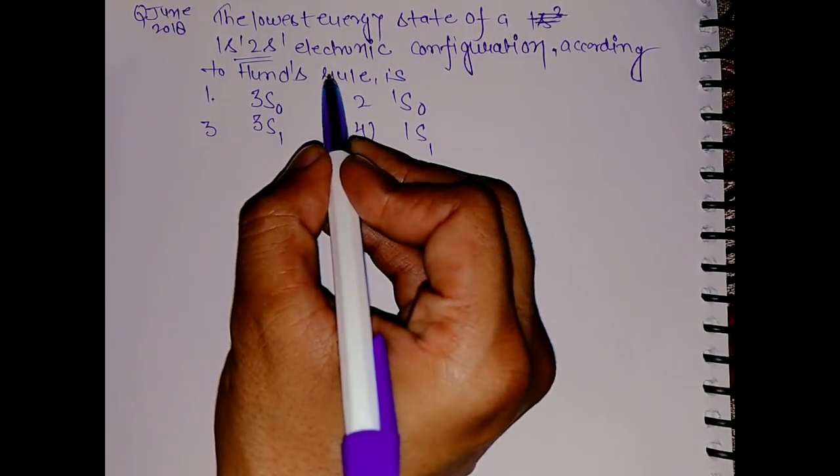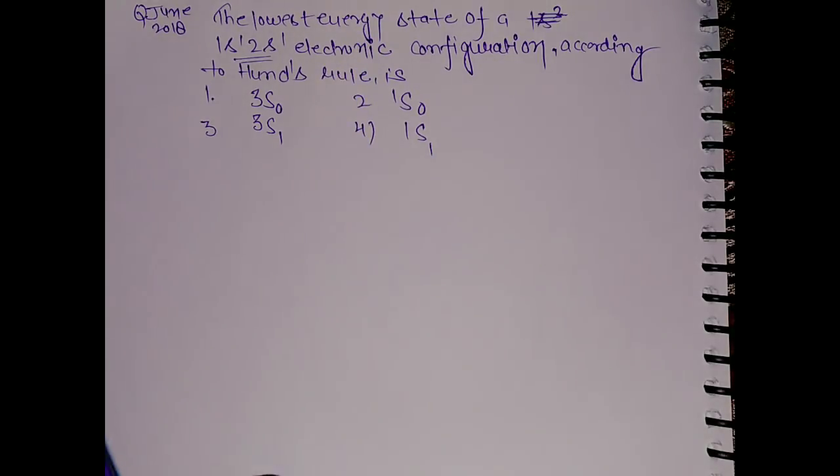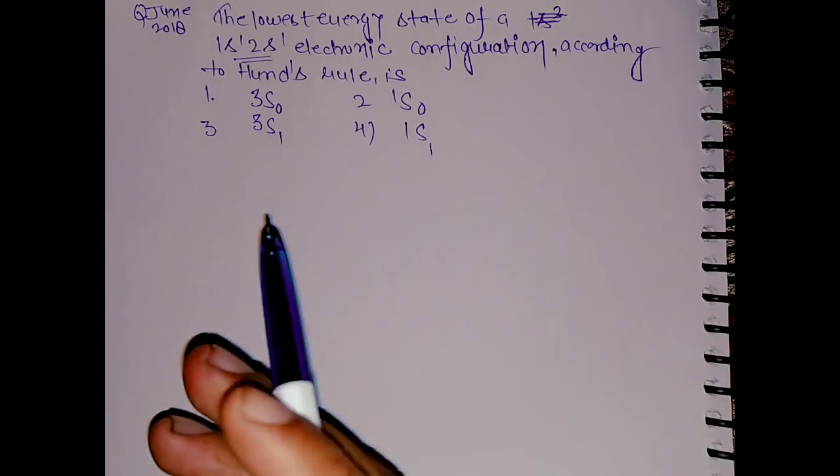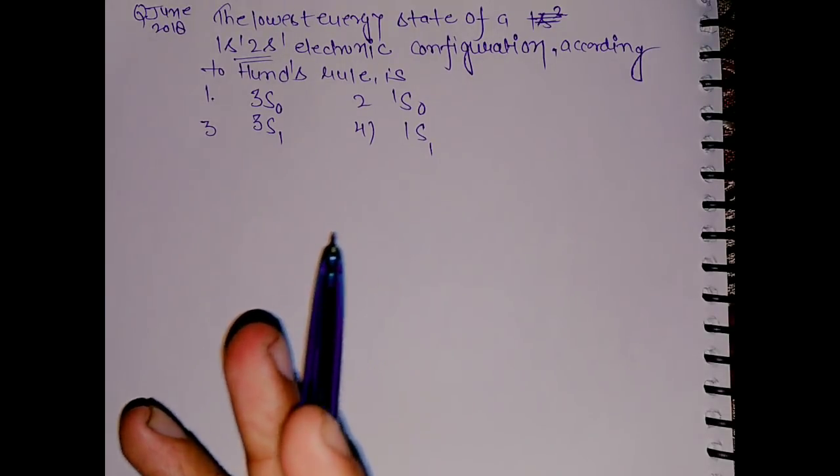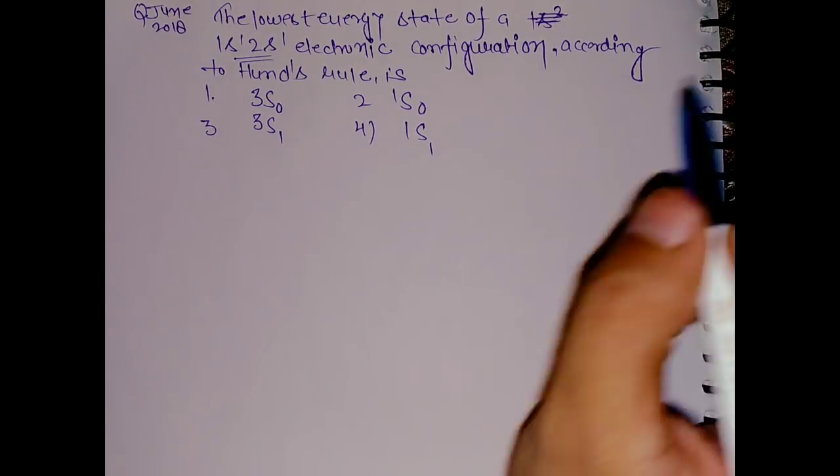According to Hund's rule, the lowest energy state will be the one which has the highest multiplicity. If the multiplicity is the same, then we look for the maximum L value.